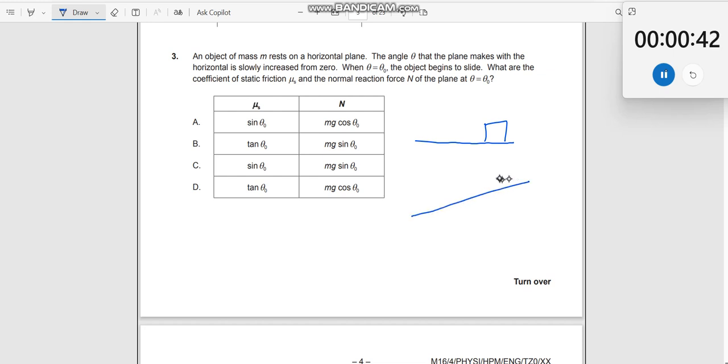So you make the plane like this, with respect to this, from theta equal to 0 to theta equal to theta, and it begins to slide over here. What begins to slide? What do you understand by this?